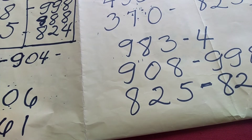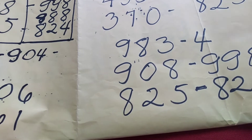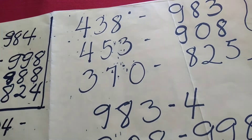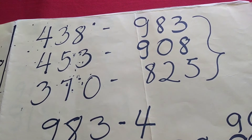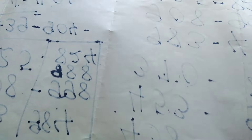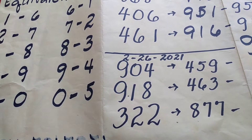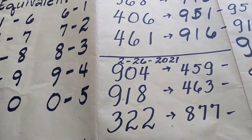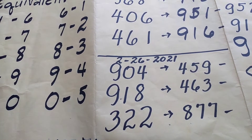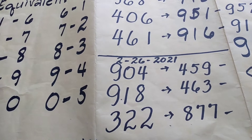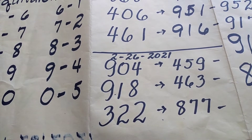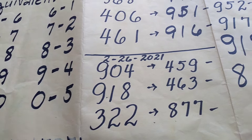Hindi natin alam, nobody knows. So ngayon, yung ating kombinasyon ay ito. Balikan natin yung lumabas na: 9, 0, 4, 4, 5, 8, 9, 1, 8, 4, 6, 3, 3, 2, 2, 8, 7, 7.